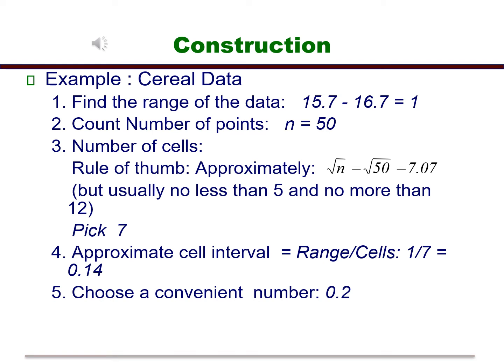Usually, you keep the number of cells somewhere between 5 and 12, but it's not an exact science. To approximate the cell interval, you would divide the range by the number of cells, which would be 1 over 7, or about 0.14. You might want to round this number to a more convenient number like 0.2.